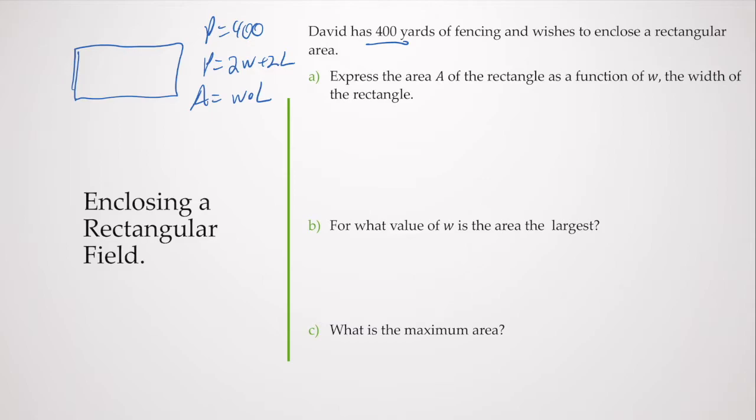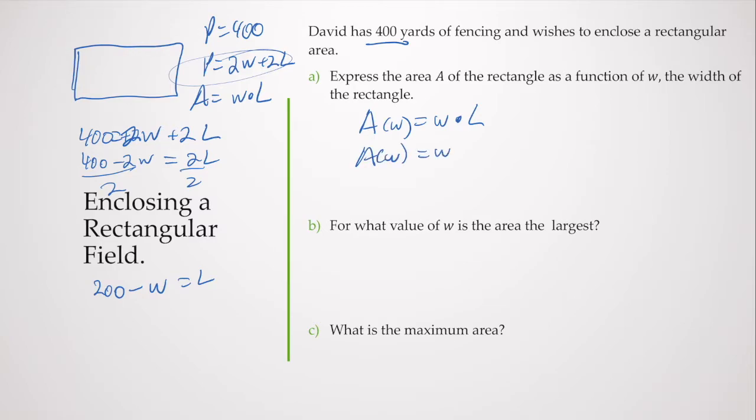That means I need to express A of W, the area, in terms of W, which is W times L. I'm going to have to solve this perimeter equation for L so I can substitute it back in. I've got 400 minus 2W equals 2L. I divide both sides by 2, that gives me 200 minus W equals L. So A of W is W times 200 minus W, so A of W is 200W minus W squared, and we'll rewrite that as negative W squared plus 200W.